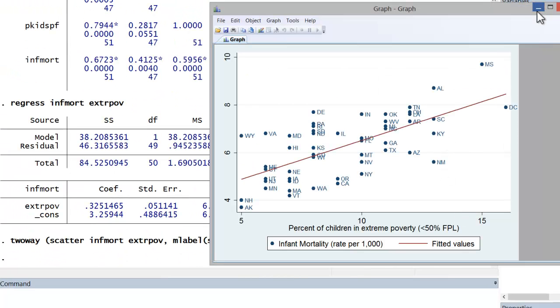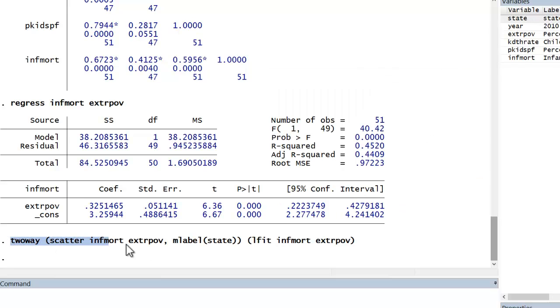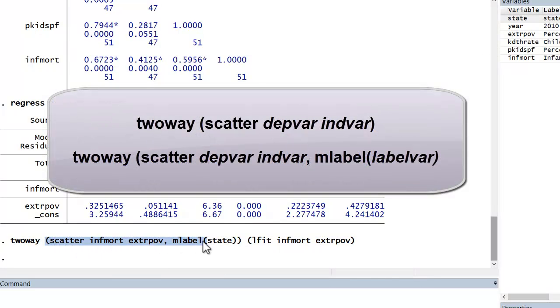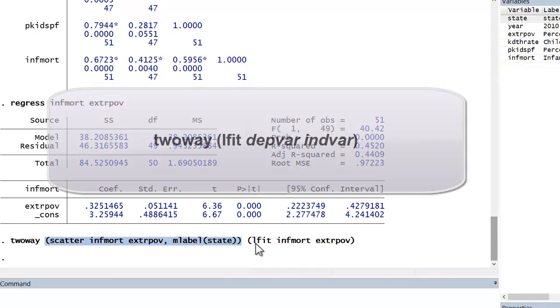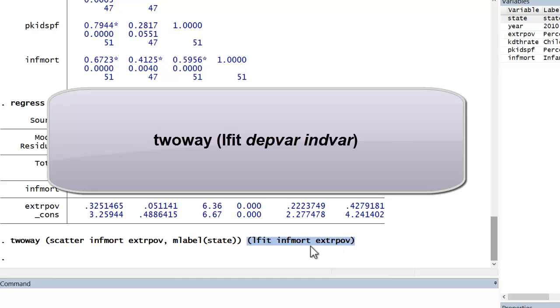Before we look at the graph, let's look at the commands. This is actually a command for two separate graphs. Two-way, parenthesis, and then here's the command for the scatter plot. Pretty simple. Scatter, your dependent variable, your independent variable, comma, mlabel, and then in parentheses, your label variable, parenthesis. And then here again is the command for the fitted line.